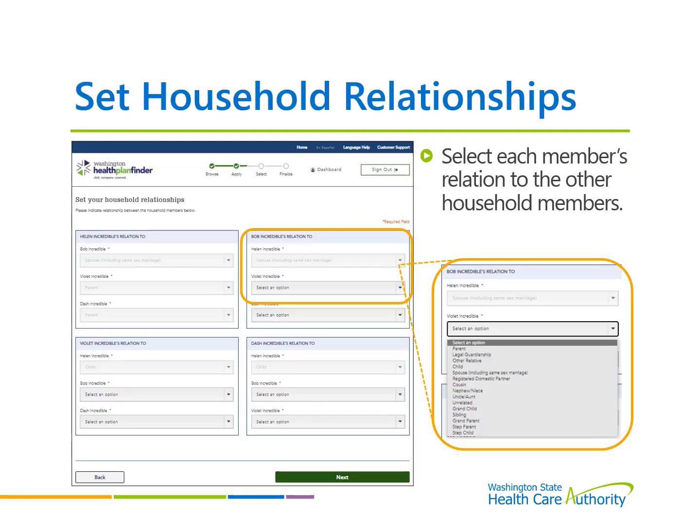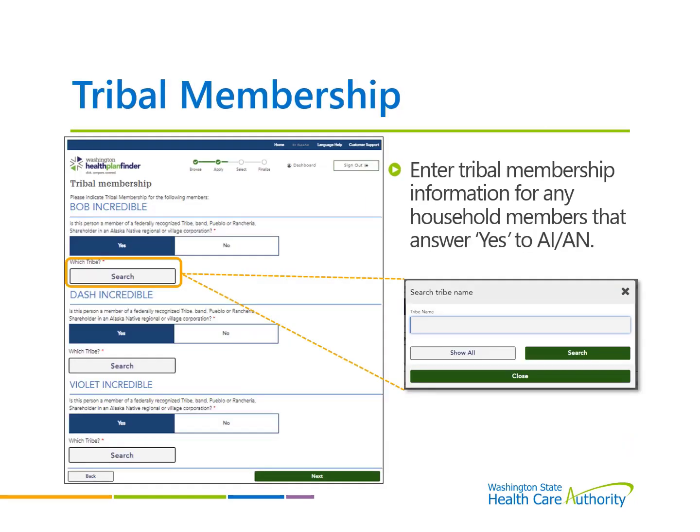After adding all the household members, set each person's relationship status to the other listed household members. This also determines the medical assistance unit size for eligibility. If any household members are American Indian or Alaska Native, this is where the tribal membership information is entered. Enter the name of the tribal membership for each household member. If the exact tribal name is unknown, use the search function to narrow down the results. Selecting Show All provides over 500 results.